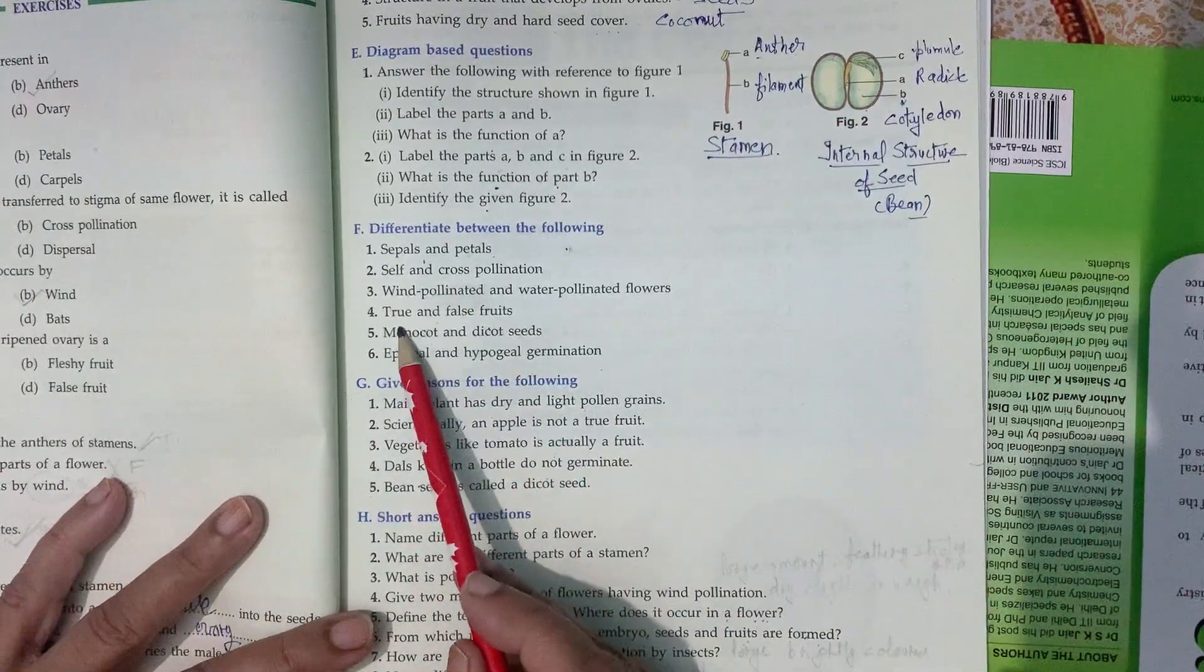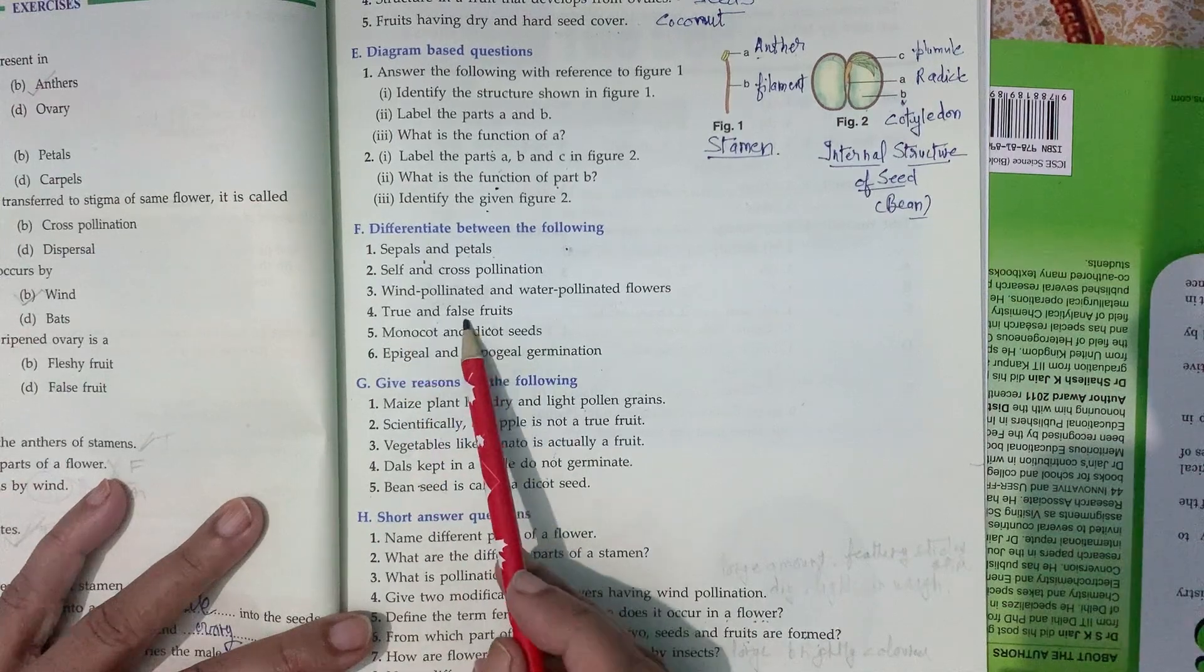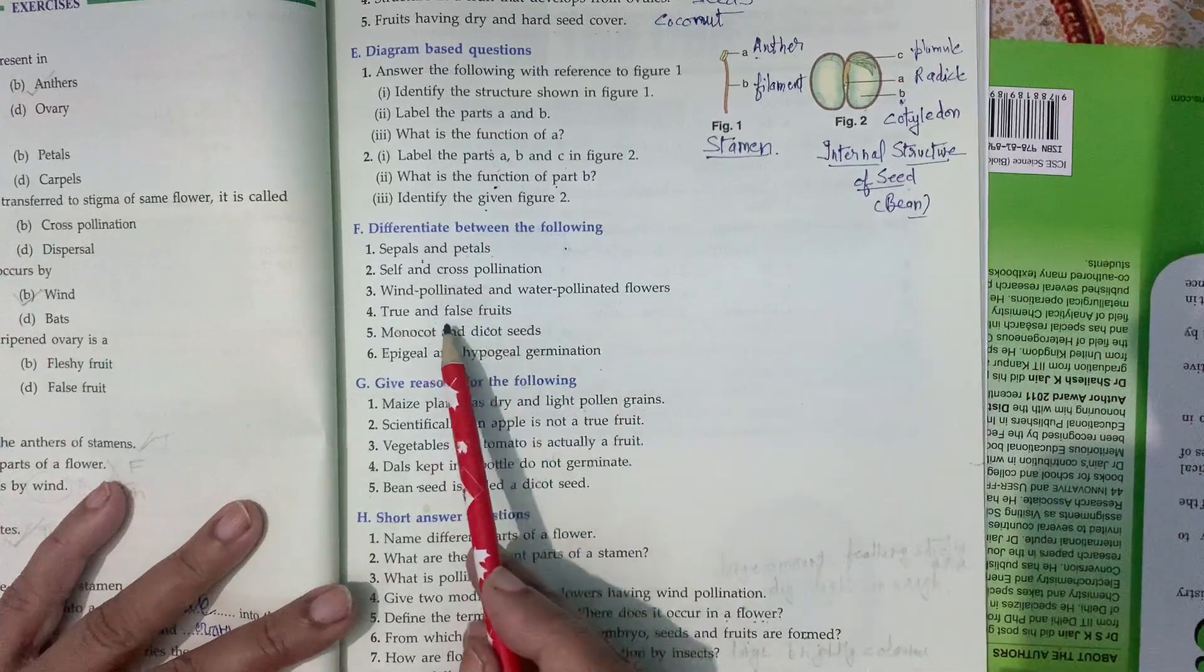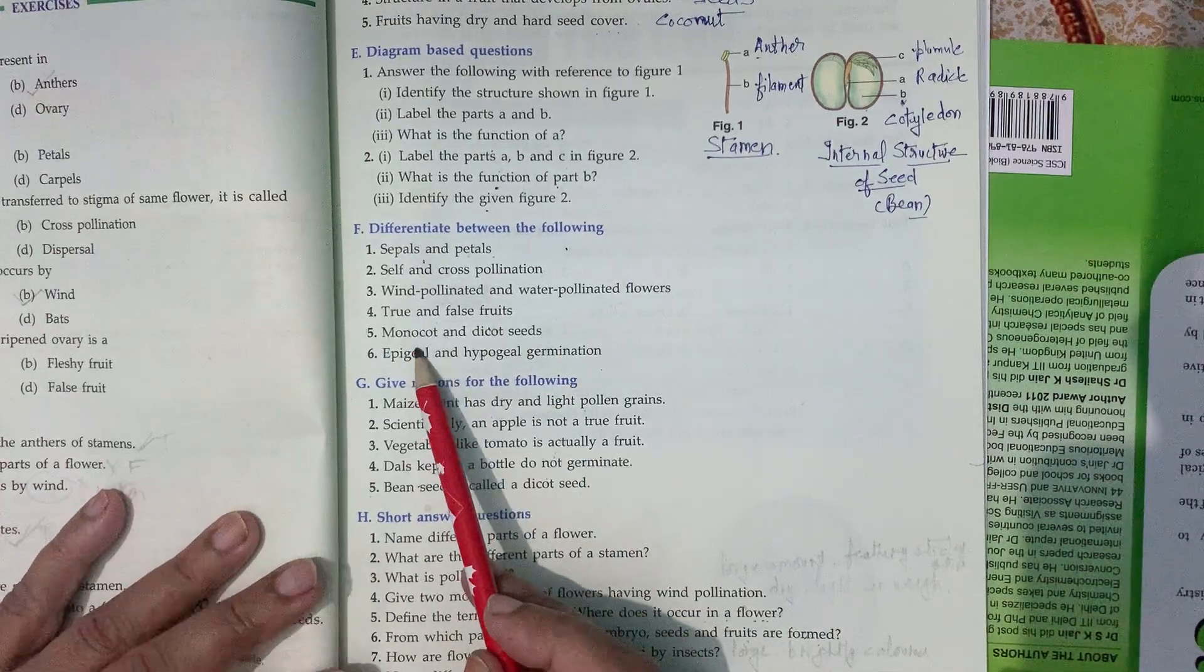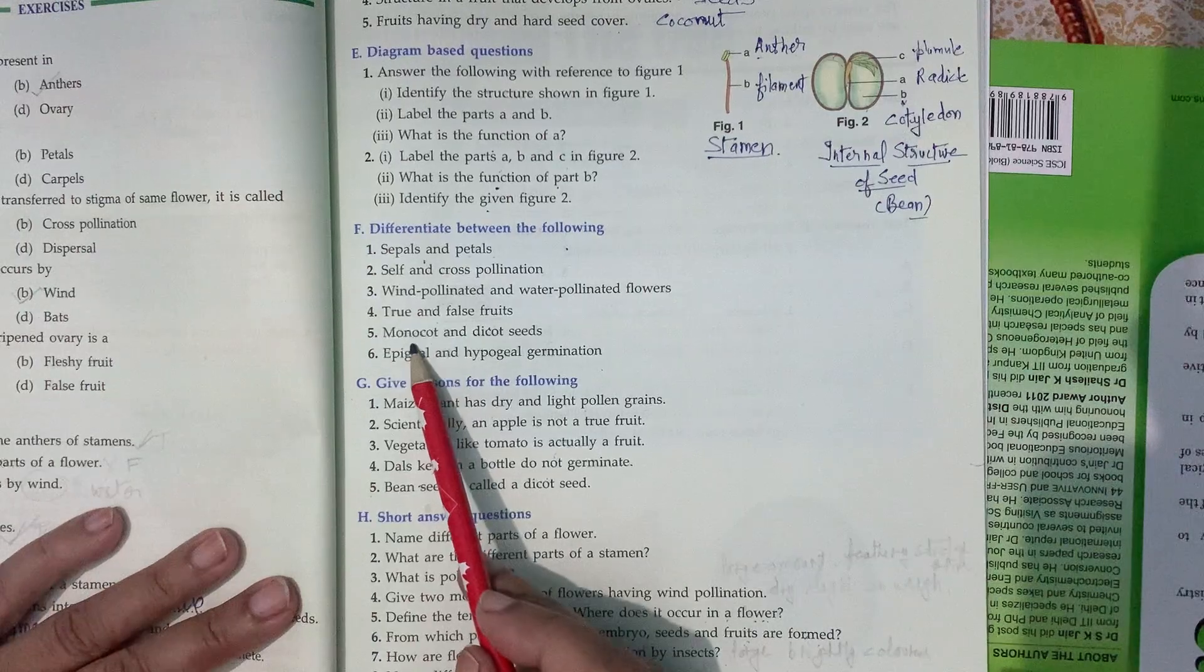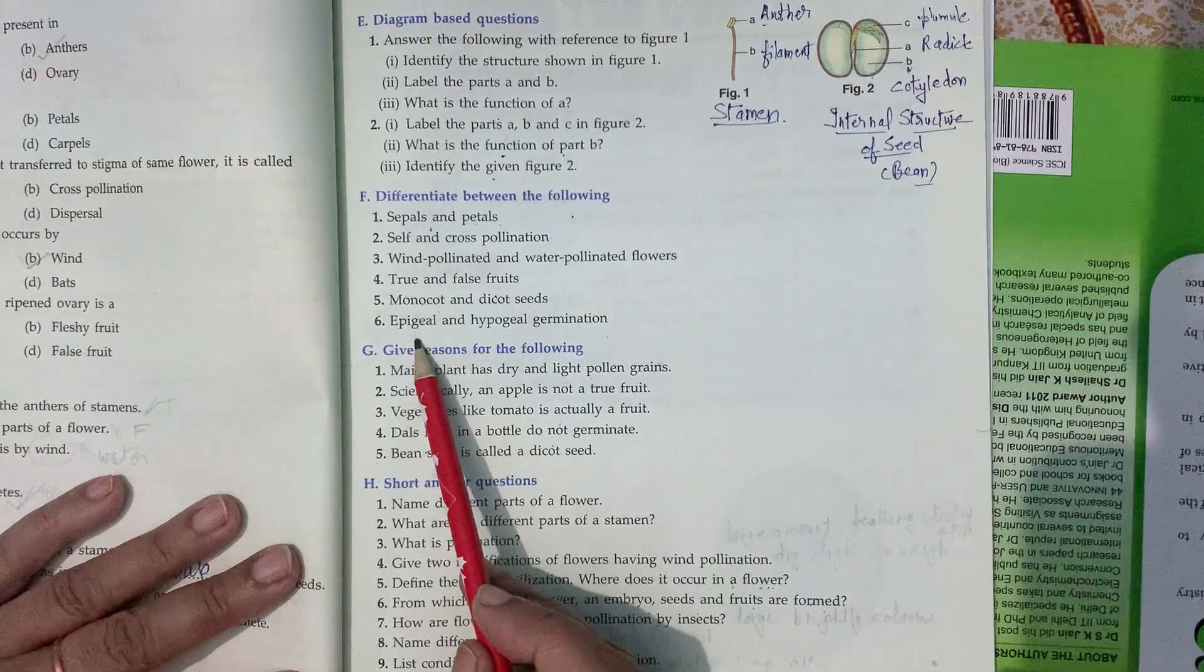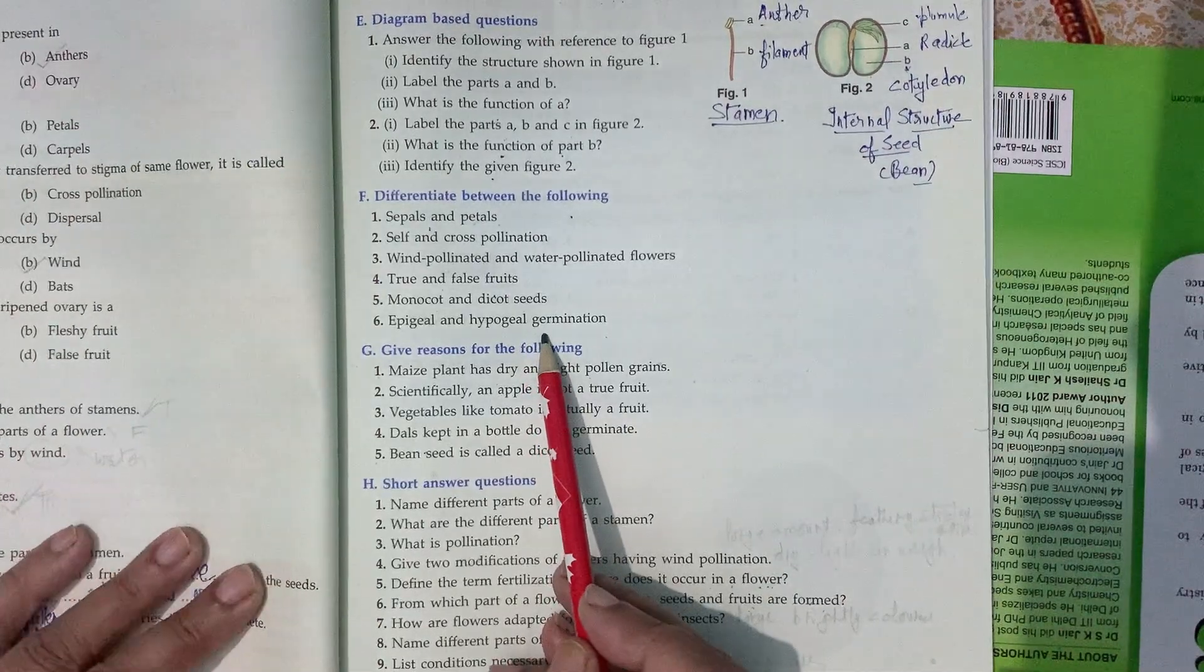True and false fruit. True fruit are formed by ovary only. False fruit are formed from any part of the flower other than ovary. Monocot seed - seeds with single cotyledon, example maize. Dicot seed - seeds with two cotyledons, example gram, bean, pea. Epigeal germination - cotyledons come above the surface of soil. Hypogeal germination - cotyledons remain under the surface of soil.